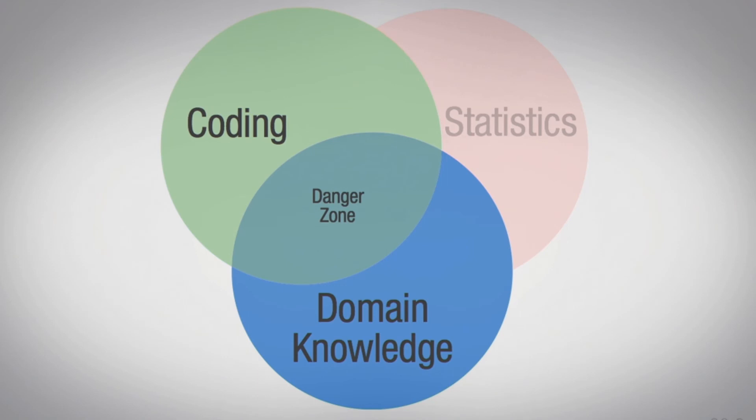The third combination here is domain knowledge and coding without statistics. Now, Conway labels this a danger zone, with the idea being that you have enough knowledge to be dangerous. While there are problems with this, I'll mention two things. First, Conway himself mentions that it seems very unlikely that a person could develop both programming expertise and substantive knowledge without also learning some math and statistics, so he says it would be a sparsely populated category, and I believe that's true.